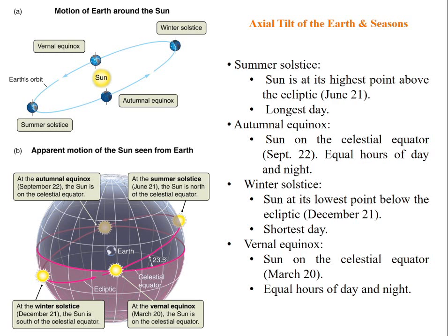Winter solstice: the sun is at the lowest point below the ecliptic, December 21st, the shortest day of the year.